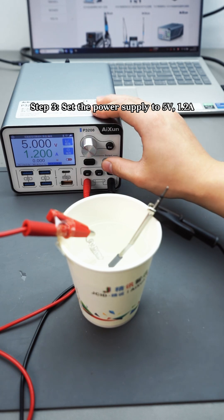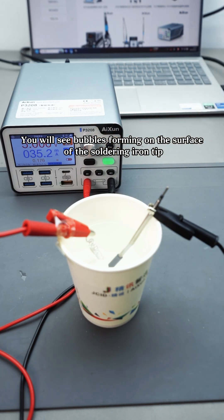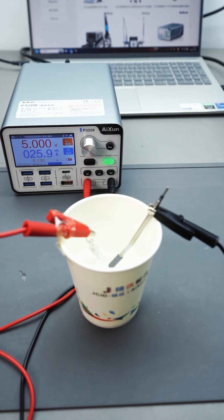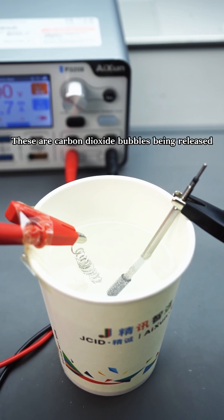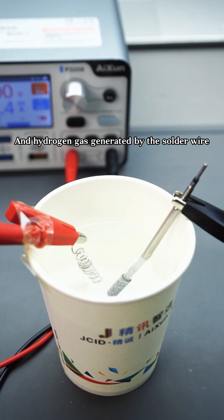Step 3: Set the power supply to 5V 1.2A. You will see bubbles forming on the surface of the soldering iron tip. These are carbon dioxide bubbles being released and hydrogen gas generated by the solder wire.